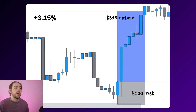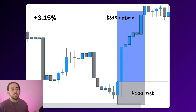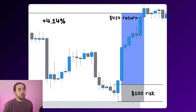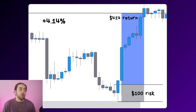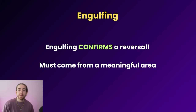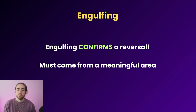With the first entry style — entering directly from the close of the engulfing candle — risking $100 returns 3.15% or $315. But if we go for the refined entry and wait for a pullback to the engulfed candle, we squeeze out another $100 in profit, returning 4.14% or $414 for the same $100 risked. Engulfing is awesome because it confirms a reversal immediately and sets you up with a trading opportunity, but context matters and the engulfing must come from a meaningful area.